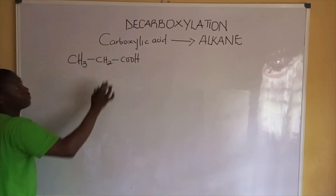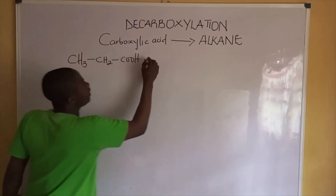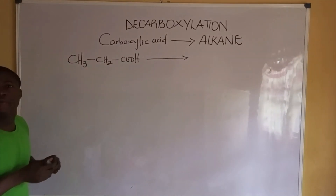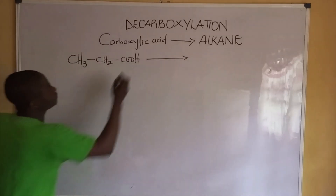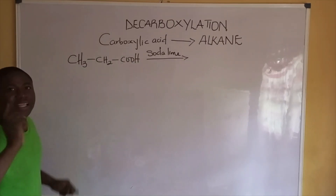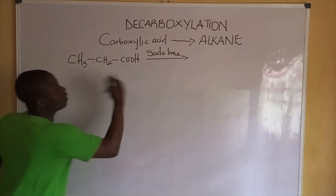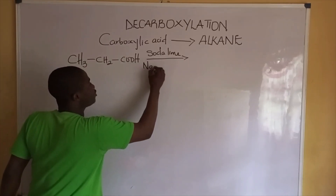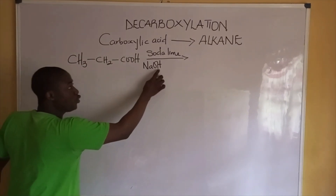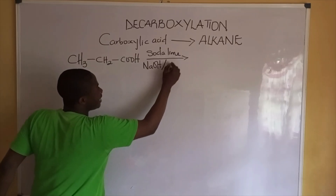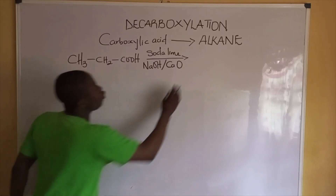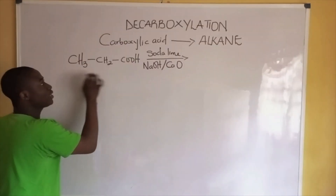For example, we are given a carboxylic acid called propanoic acid. Decarboxylation works in the presence of a reagent called soda lime. Soda lime is a mixture of two compounds: caustic soda, also called sodium hydroxide, and calcium oxide, also called quicklime. From this reaction we get an alkane.